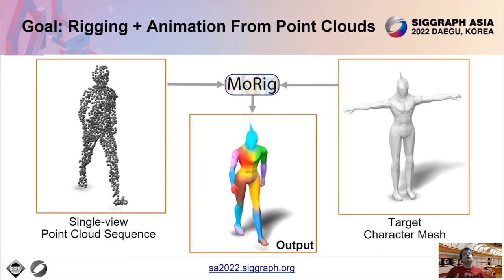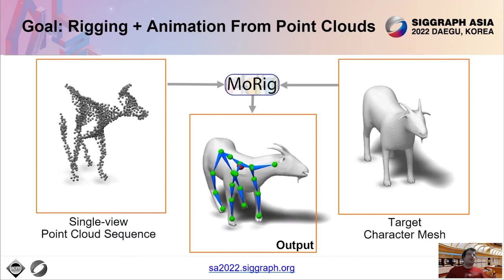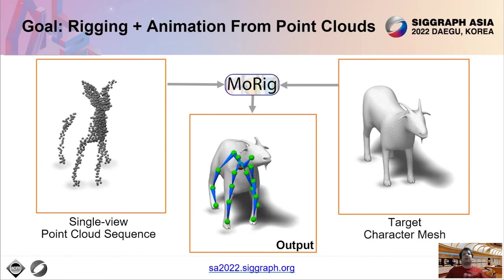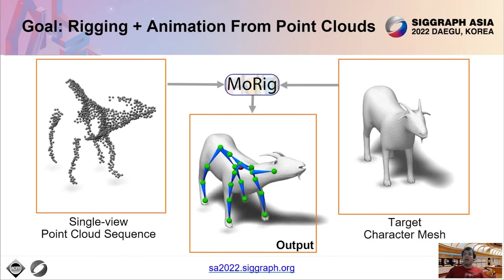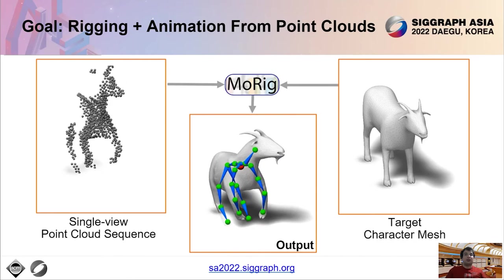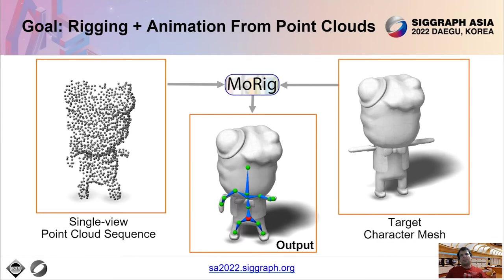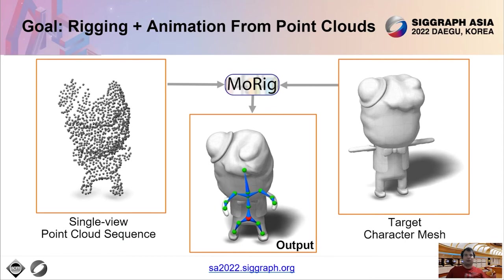Our method is not constrained within a particular character category or skeletal template. It can rig and animate diverse characters, such as quadrupeds here, or toy puppets with varying articulation structure.